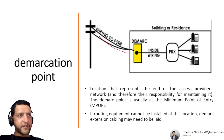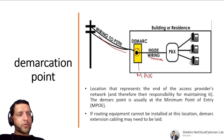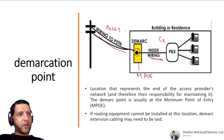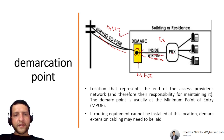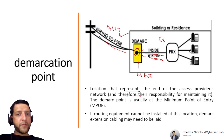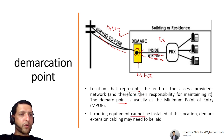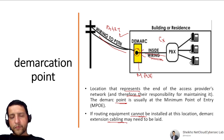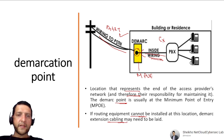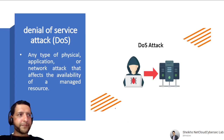Demarcation Point (demarc) is the location representing the end of the access provider's network and therefore their maintenance responsibility. For example, with an AT&T connection, they are responsible up to the demarc point; everything inside is the customer's responsibility. The demarc is also called the Minimum Point of Entry (MPOE). A demarc extension cable may be needed if routing equipment cannot be installed at this location.